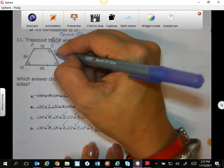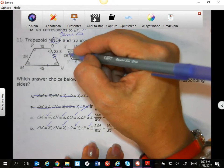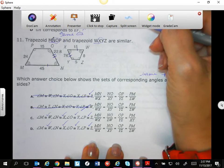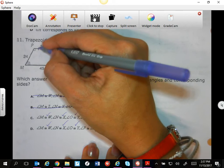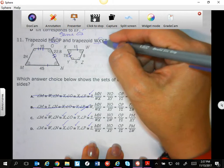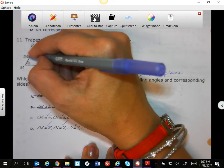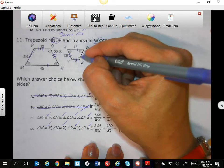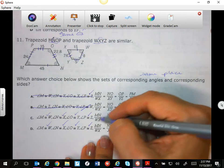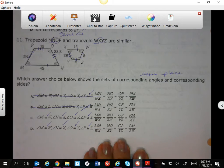NO, XY. OP—one, two, three—and YZ—one, two, three. One, two, three, four. One, two, three, four. So now we can check. I'm only looking at C and D because those are the only ones that are left.